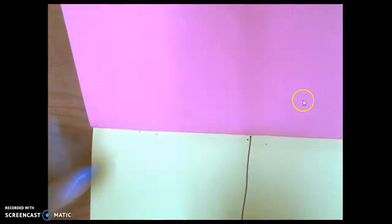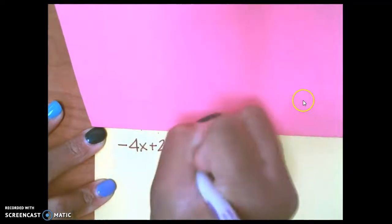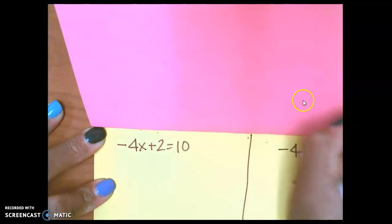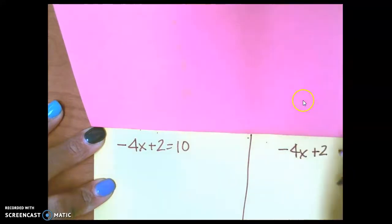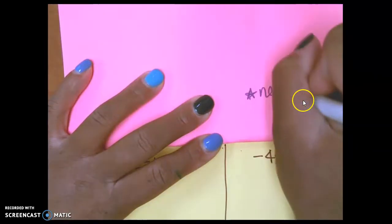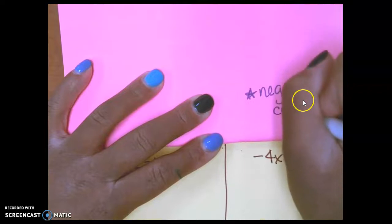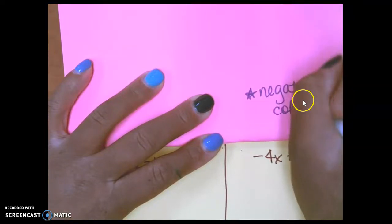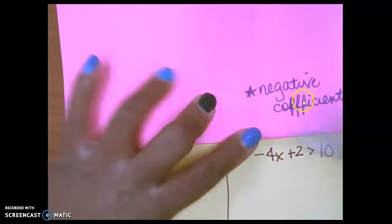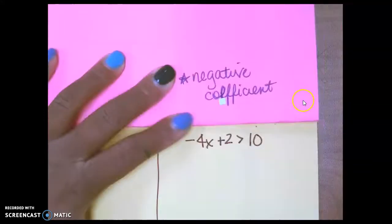Last pair of examples. I have negative 4x plus 2 equals 10. And I have negative 4x plus 2 is greater than 10. I have a negative coefficient here. Coefficient. Let me erase this because this looks like 3 F's. Negative coefficient.